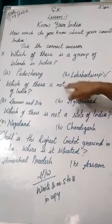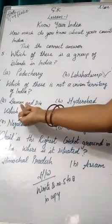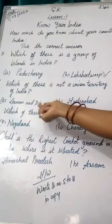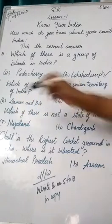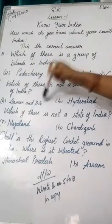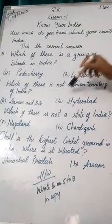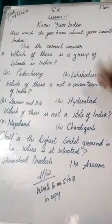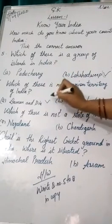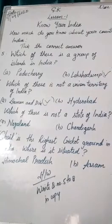You are asked: which of these is NOT a union territory? You know that Daman and Diu, and Dadra and Nagar Haveli, are both our union territories. Hyderabad is the capital of Andhra Pradesh, so it is not a union territory. The correct answer is Daman and Diu.